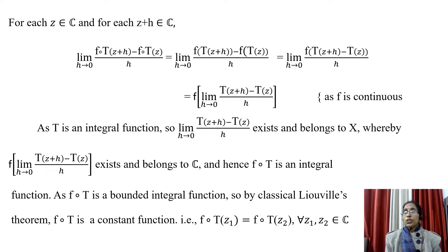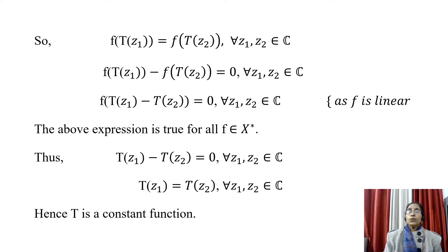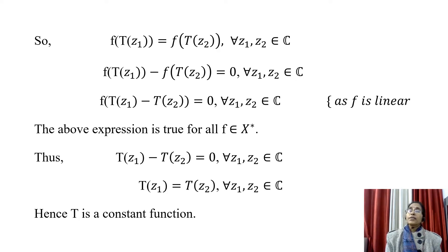That means (f∘T)(z₁) = (f∘T)(z₂) for every z₁, z₂ in ℂ — the image of any two complex numbers is the same. So we can write f(T(z₁)) = f(T(z₂)) for every z₁, z₂ in ℂ. This gives f(T(z₁)) − f(T(z₂)) = 0, and since f is linear, f(T(z₁) − T(z₂)) = 0 for all z₁, z₂ in ℂ. This expression is true for all f in X*.